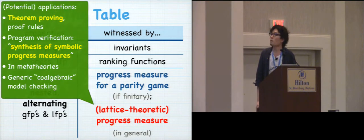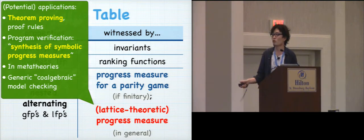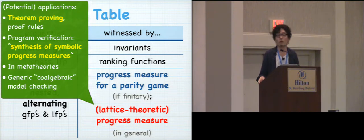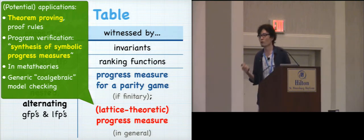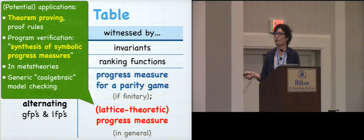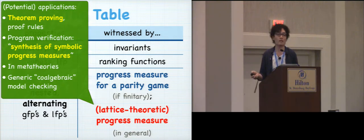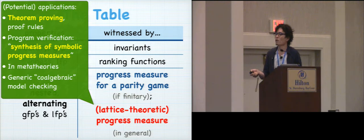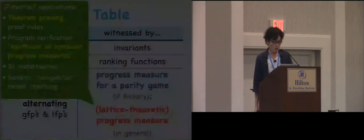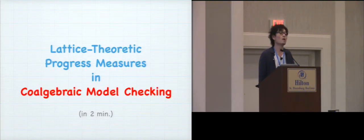And so what we expect is a bunch of potential applications of this lattice theoretic notion of progress measure, which is a generalization of this algorithmic notion. For example, in theorem proving or proof assistance, you could use it as a proof rule. And another thing is, in the context of program verification, there are a lot of work on symbolic synthesis of invariants or symbolic synthesis of ranking functions for termination. But then given this notion, we can naturally think of symbolic synthesis of progress measures for nested or alternating fixed-point specifications. And we also expect this, the last application is generic coalgebraic model checking, for which I'm gonna spend the last minutes of this talk on. So this is our second main contribution.